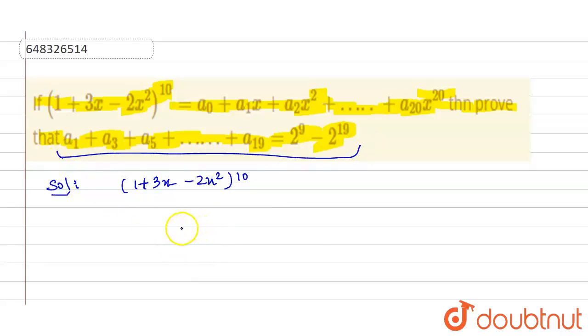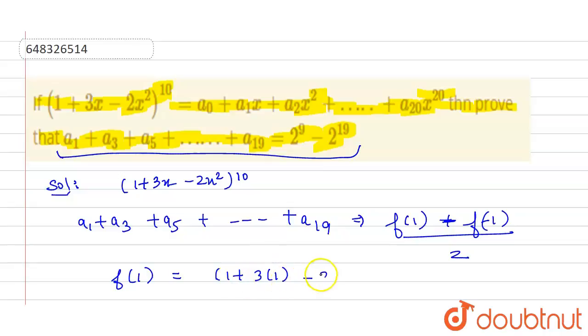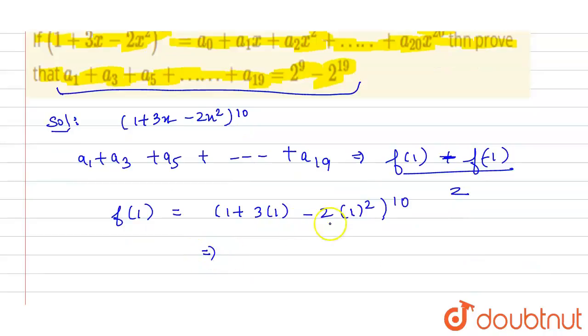So for that we have a general formula. So a1 plus a3 plus a5 plus up to a19 will be equals to f(1) plus f(-1) divided by 2. So putting the value, f(1) will be equals to 1 plus 3 into 1 minus 2 into 1 square raised to power 10. And that will be equals to 4 minus 2 so 2 raised to power 10.